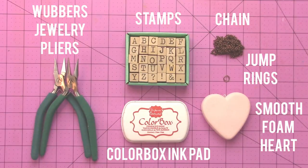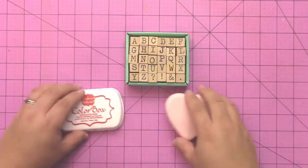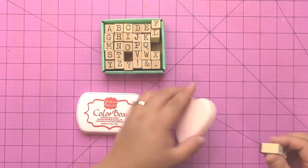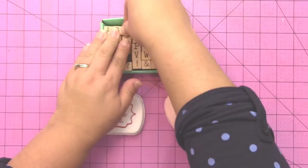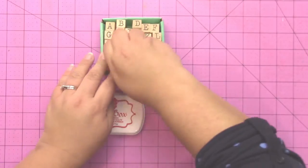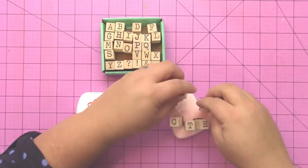This is what you're going to use to make your sentiment. You can have it say whatever you want, just look at some conversation hearts to get ideas. Katie wanted this one to say 'you are cute,' so you're going to position your stamps to figure out if they're going to fit and how to lay them out.